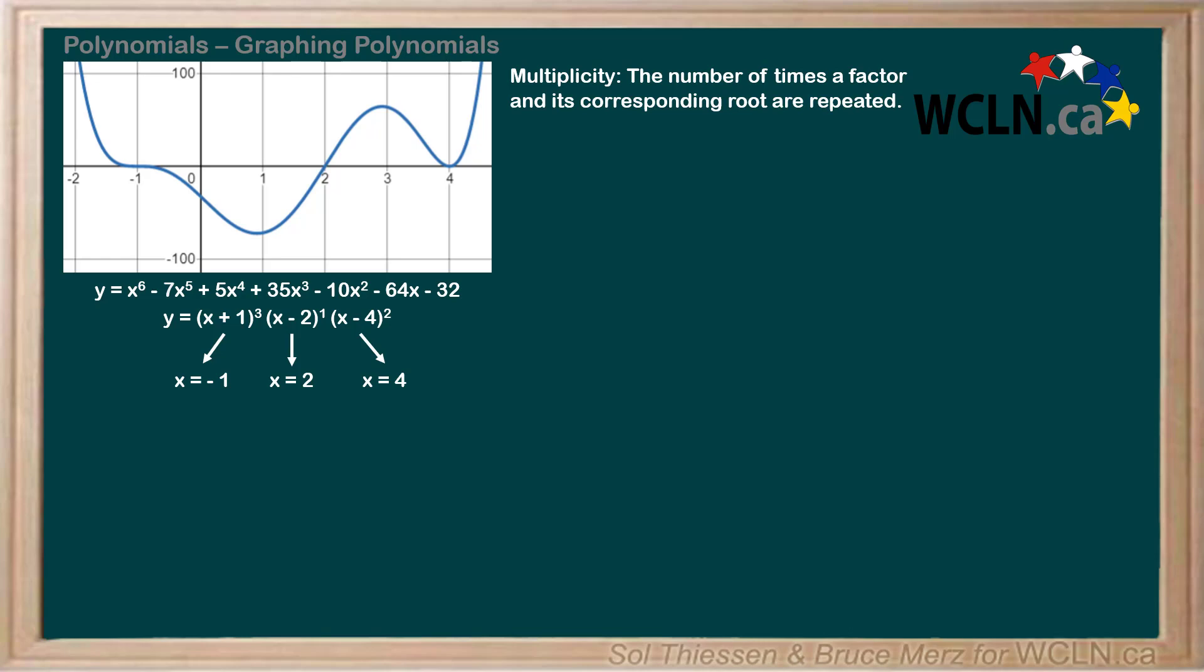In this example, the factor x plus 1 is repeated 3 times, so we say that the corresponding root at x equals negative 1 has a multiplicity of 3. The factor x minus 2 appears only once, so we say that the corresponding root at x equals 2 has a multiplicity of 1. Finally, the factor x minus 4 is repeated twice, so we say that the corresponding root at x equals 4 has a multiplicity of 2.